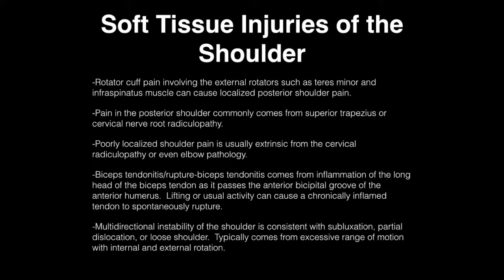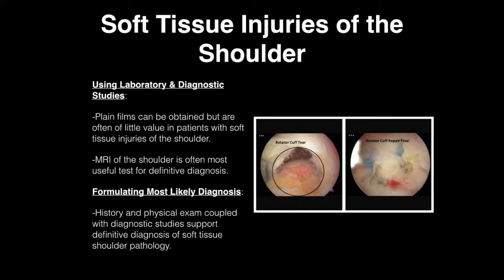Biceps tendonitis or rupture comes from inflammation along the head of the biceps tendon as it passes along the anterior bicipital groove of the anterior humerus. Lifting or usual activity can cause a chronically inflamed tendon to spontaneously rupture. Multidirectional instability of the shoulder is consistent with subluxation — a partial dislocation or loose shoulder typically results from excessive range of motion with internal and external rotation. Plain films can be obtained but are often of little value in soft tissue injuries. MRI of the shoulder is the most useful test for definitive diagnosis.